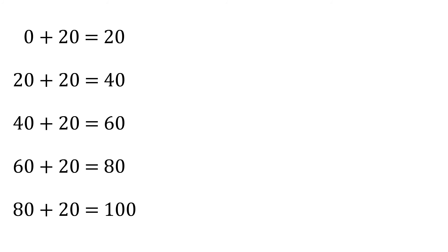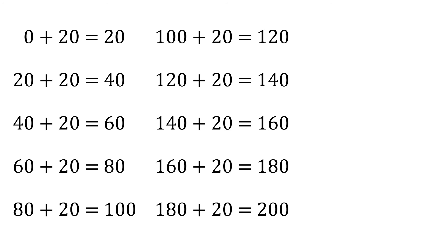And let's look at one other pattern for addition. Zero plus twenty equals twenty. Twenty plus twenty equals forty. Forty plus twenty equals sixty. Sixty plus twenty equals eighty. Eighty plus twenty equals one hundred. One hundred plus twenty equals one hundred twenty. One hundred twenty plus twenty equals one hundred forty. One hundred forty plus twenty equals one hundred sixty. One hundred sixty plus twenty equals one hundred eighty.